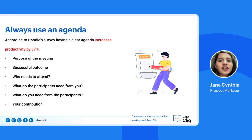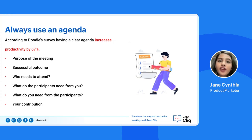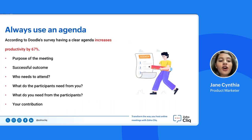Your agenda should address these six questions: What is the purpose of the meeting? What would a successful outcome look like? Who needs to be in the room to reach that successful outcome? What do the participants need from you? What do you need from the participants? And what is your contribution during the call?